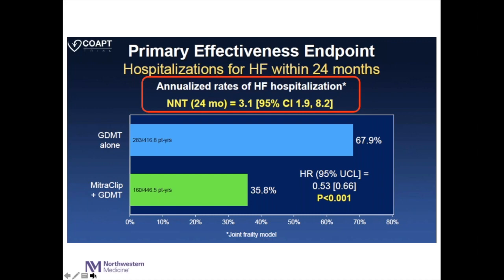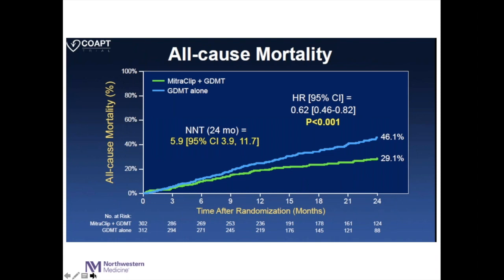How many patients would you need to treat to prevent one hospitalization? Approximately three — which is a huge treatment effect when you think about quality of life improvement. Could we actually improve patients' survival? Yes. Forty-six percent died within two years with guideline therapy alone, but with the clip, it was down to 29%. That means only six patients have to be treated to save one life — a huge treatment effect for anything we do in cardiovascular disease.